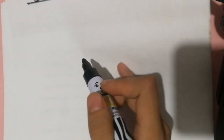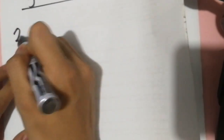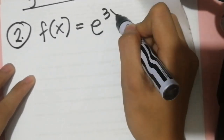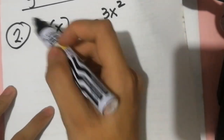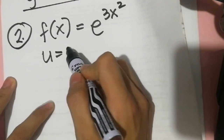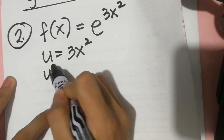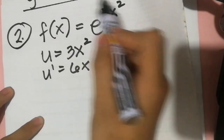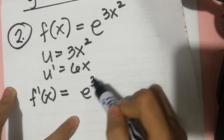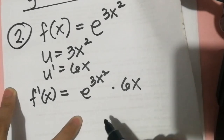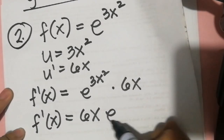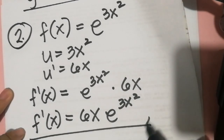Example number 2: f of x is equal to e raised to 3x squared. Using rule number 2, let u equal the exponent, which is 3x squared. Then u prime is 6x. So the derivative is f prime of x equals e raised to 3x squared times 6x. Therefore, f prime of x is equal to 6x times e raised to 3x squared. This is the final answer.